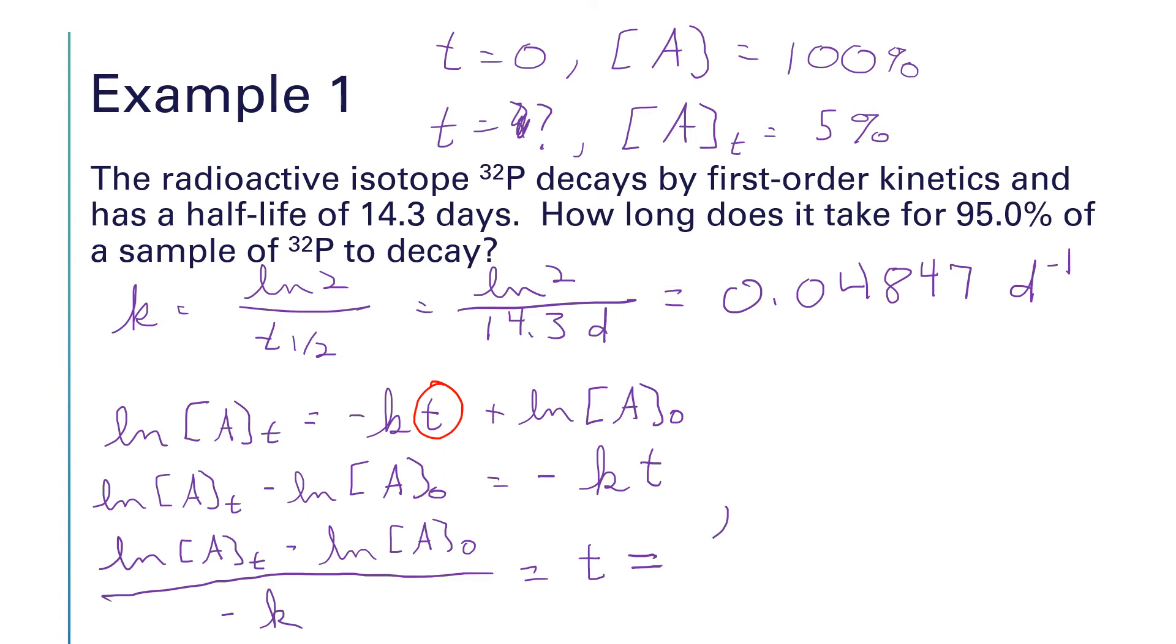So the natural log of A sub t will be the natural log of 5. And then we're going to subtract the natural log of A0, which is the natural log of 100. And we're going to divide through by minus k, which is negative 0.04847 per day. So we have one over one over days. So in the end, our unit will work out to be just plain days. I take 5 natural log minus 100 natural log. Up there in the numerator, I get something really close to negative 3. And then I'm going to divide that by a negative 0.04847. And that's going to give me 61.8 days.